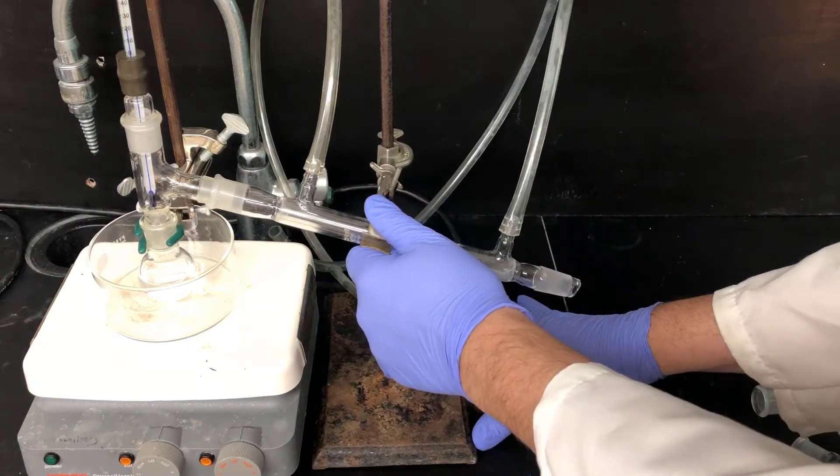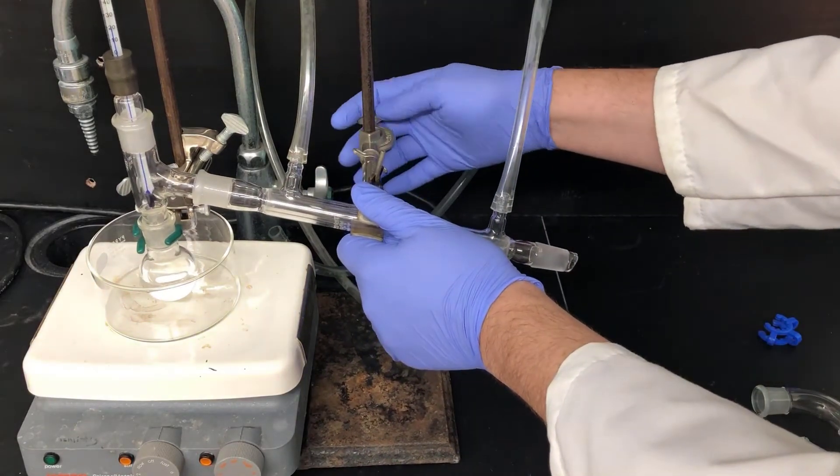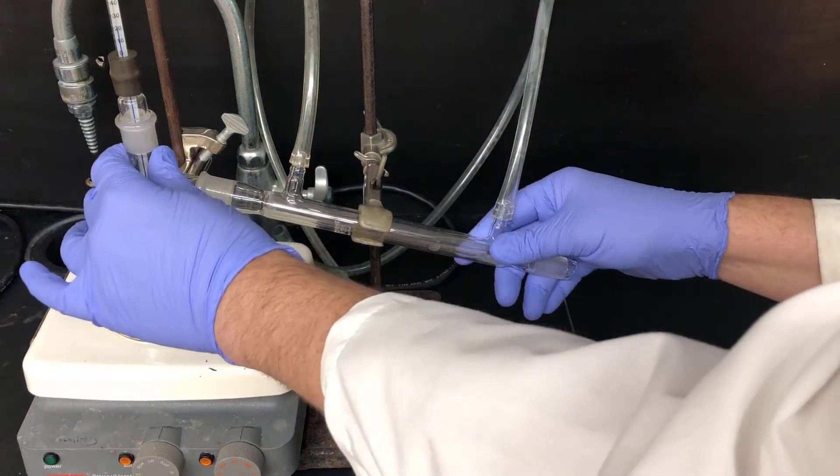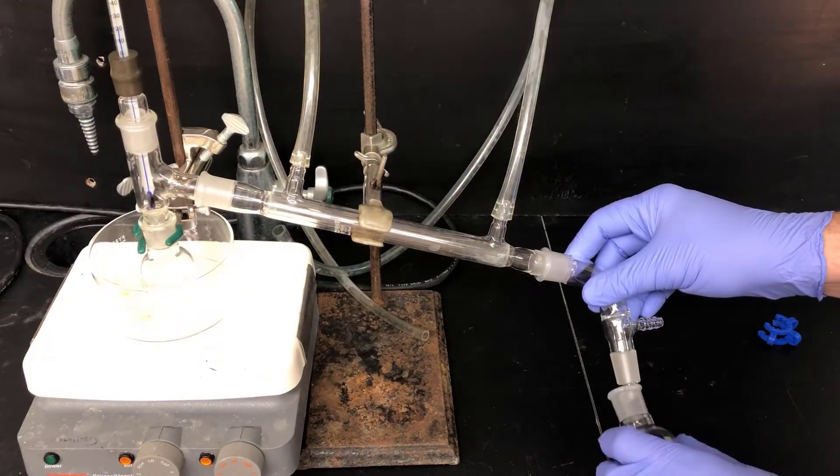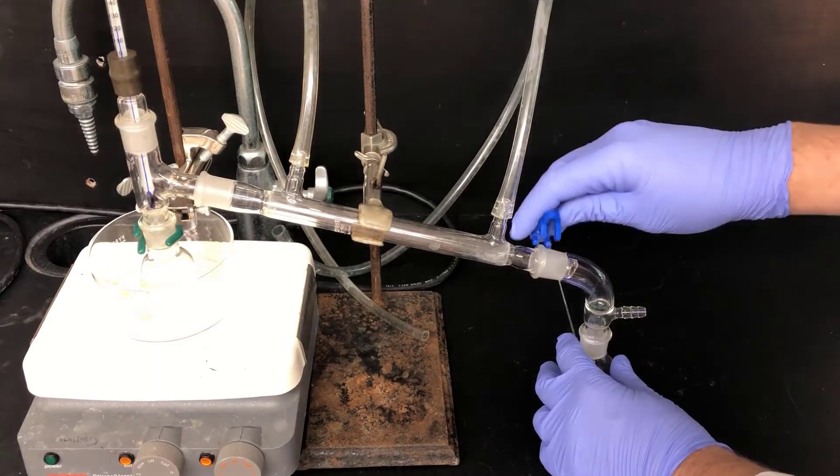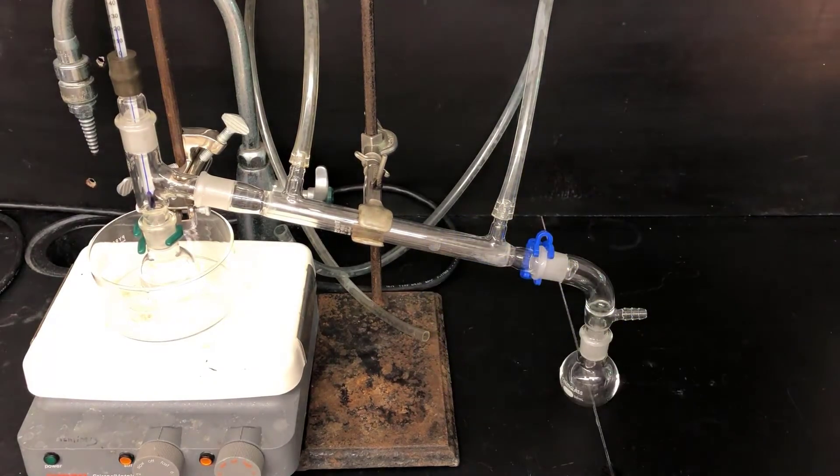Now I'll connect the condenser to the distillation head. I'll clamp it down and make sure all the joints are nice and tight. Then I'll add the vacuum adapter and the collection vessel, and secure these with two blue Keck clamps.